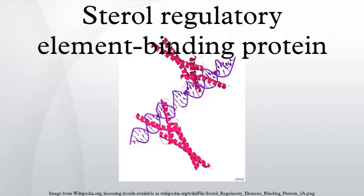Unactivated SREBPs are attached to the nuclear envelope and endoplasmic reticular membranes. In cells with low levels of sterols, SREBPs are cleaved to a water-soluble N-terminal domain that is translocated to the nucleus. These activated SREBPs then bind to specific sterol regulatory element DNA sequences, thus upregulating the synthesis of enzymes involved in sterol biosynthesis. Sterols in turn inhibit the cleavage of SREBPs, and therefore synthesis of additional sterols is reduced through a negative feedback loop.